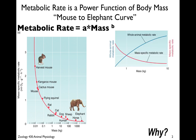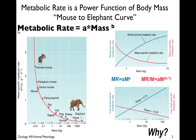We learned about the whole animal metabolic rate as well as the mass-specific metabolic rate. For the whole animal, as animals get larger their metabolic rate goes up — makes sense. But pound for pound, if we take account of size, their metabolic rate actually goes down. And if you take the log base 10 of this equation, we get straight lines, which makes it a lot easier to graph.